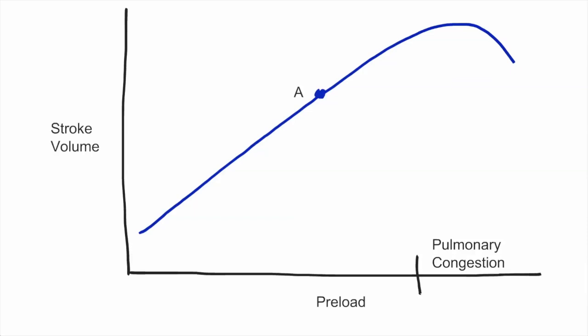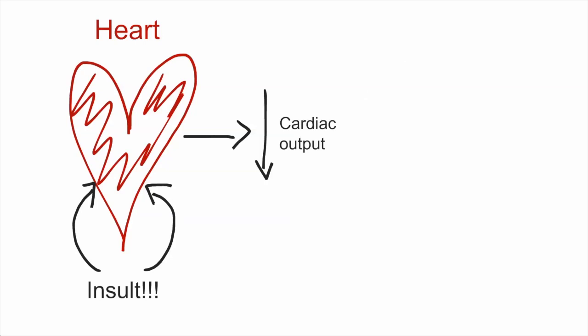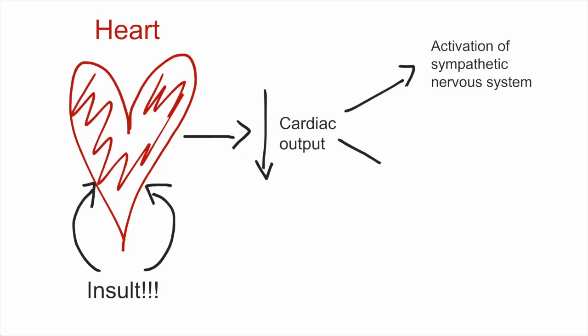We can look closer at this by looking at the Frank-Starling relationship, which shows us the relationship of stroke volume to preload. We start with the first blue curve, which is a normal heart, with someone at point A on that curve. The red curve is the heart after insult. So for every point of preload, you have a lower stroke volume. At a given preload, this person moves from point A on the blue curve to point B on the red curve, which manifests as a lower cardiac output. As a result of the lower cardiac output, you have activation of the sympathetic nervous system, as well as decrease in renal blood flow.